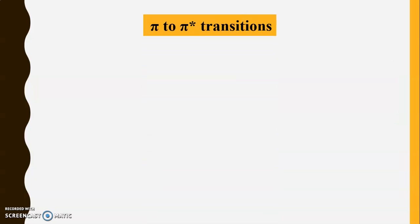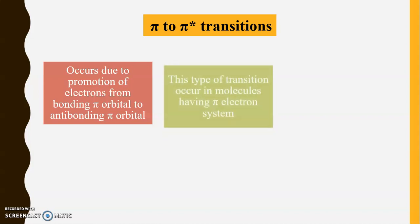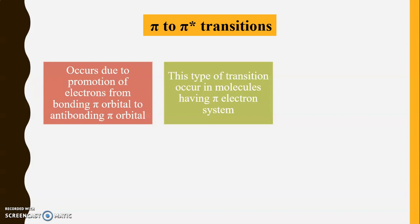The next type of transition to discuss is the pi to pi star transition. This occurs due to the promotion of electrons from a bonding pi orbital to an antibonding pi orbital. Compounds having a conjugated system show the pi to pi star transition. These are a very important type of transition because they give more information related to the compound, and the energy transitions occur in the normal UV region of 200 to 400 nanometers. This transition occurs in molecules having a pi electron system — either conjugated or non-conjugated — with double or triple bonds.